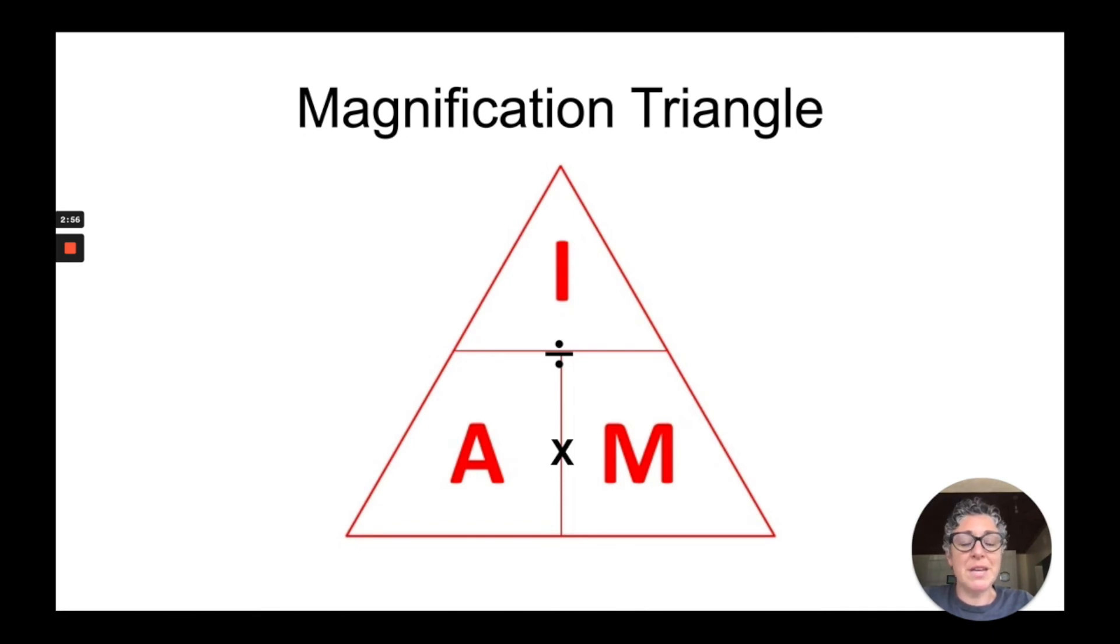If you remember the magnification triangle then you will be able to input all of the information to do the calculations. Remember magnification is image divided by actual. Actual is image divided by magnification and image is actual multiplied by magnification. If you remember the triangle and where the division bar and the multiplication bar are, then you will always be able to remember the formulas without having to memorize them.